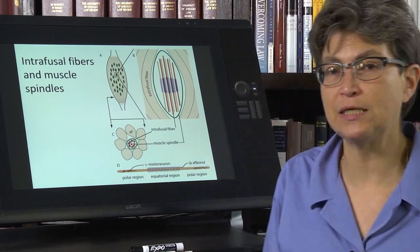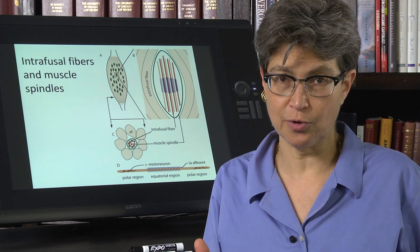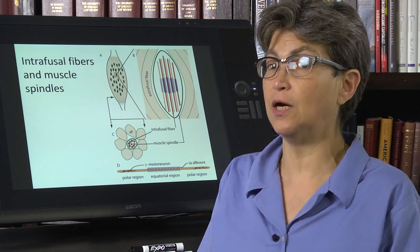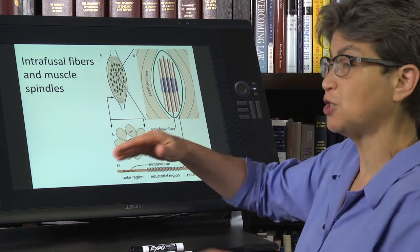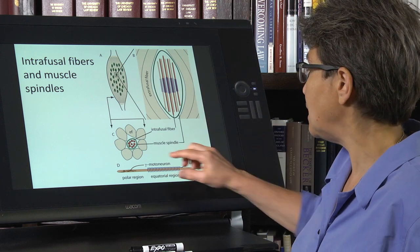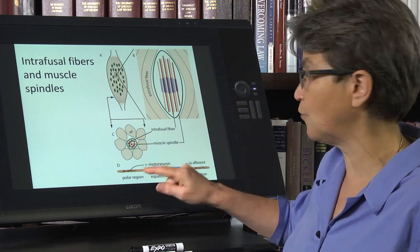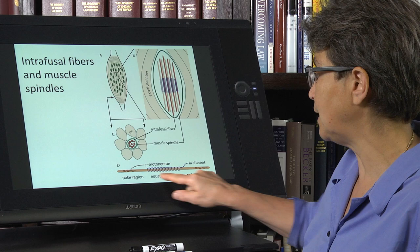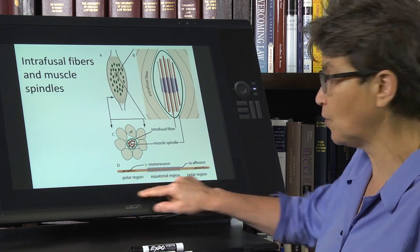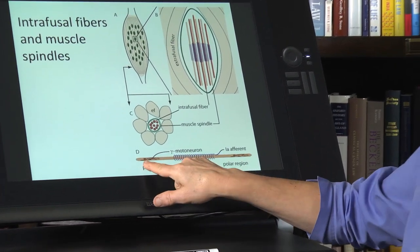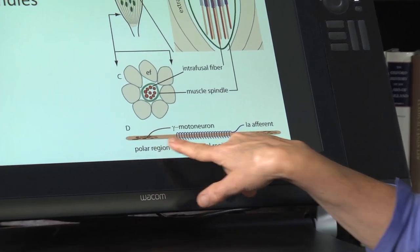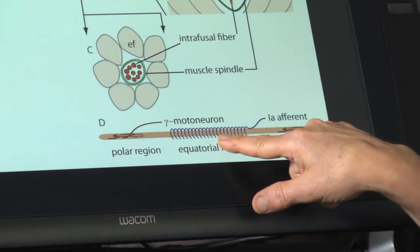The intrafusal fibers are not simply a thin muscle fiber. They're a little bit different because they're specialized along their length. If we look at one intrafusal fiber from one end to the other end, if we can zoom in right here,